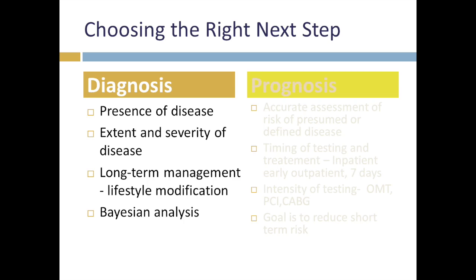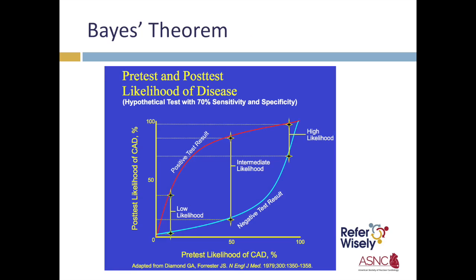The next step is to establish a diagnosis as to the etiology of the patient's chest pain — we need to determine the presence of disease and the extent and severity of disease. When it comes to non-invasive cardiac testing, much of our approach is based on Bayesian analysis. Bayes' theorem states that results of diagnostic tests do not stand on their own; rather, the results combined with the pre-test likelihood of disease determine the post-test likelihood of disease. Diagnostic testing has the greatest value when the post-test likelihood of disease can be established or ruled out with relative certainty.